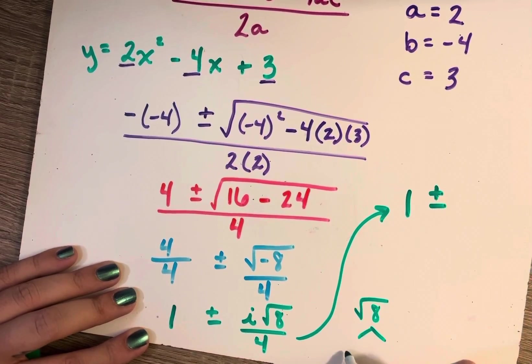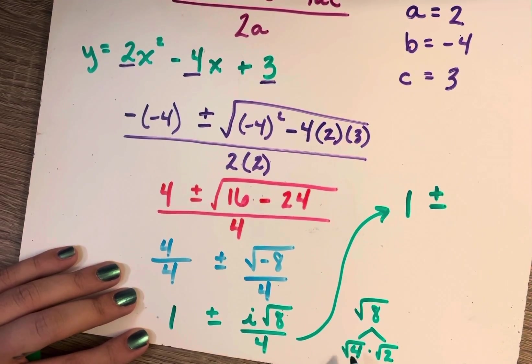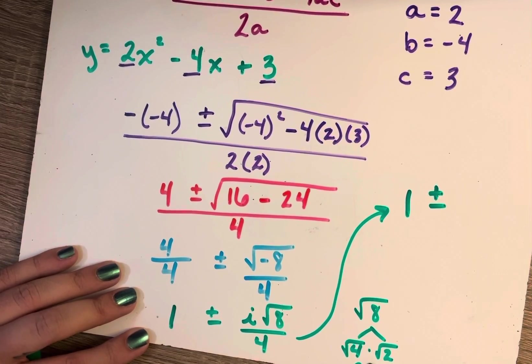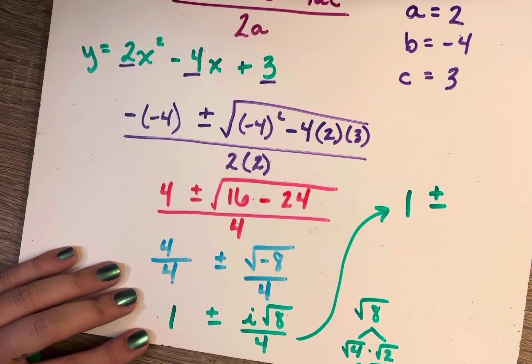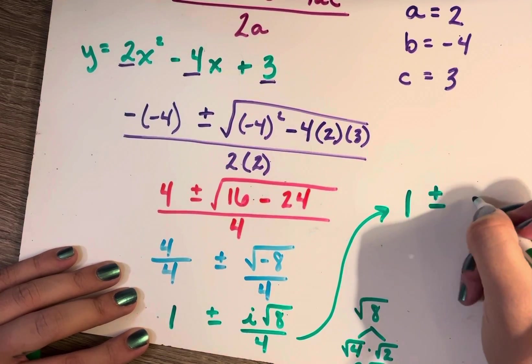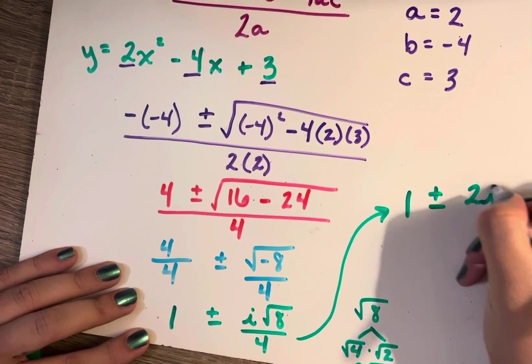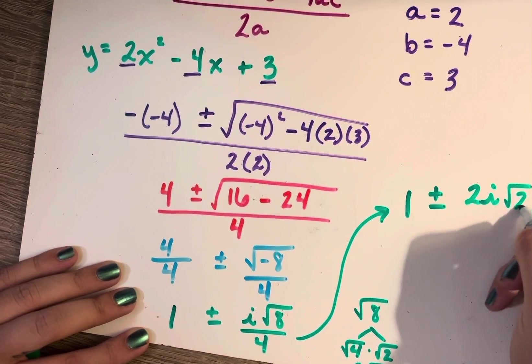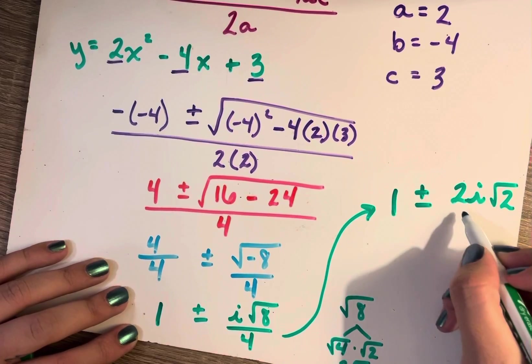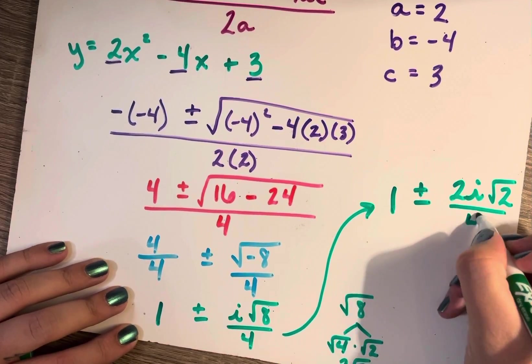Radical 8, I can think of as radical 4 times radical 2. I can simplify this radical. The square root of 4 is just 2. So radical 8 is equal to 2 radical 2. So I still have this i out in front. So I'm going to put the 2 and the i together. So 2i and then I have a radical 2.